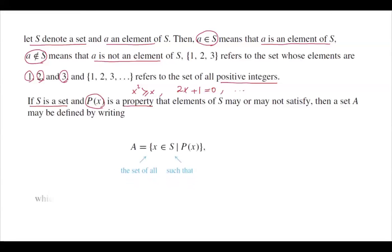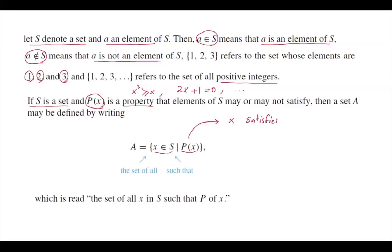Set A can be written as the set of all x values in S such that P(x) holds, meaning x in S satisfies property P. For example, A equals the set of all x values in the natural numbers such that x squared is greater than or equal to x. We can define sets in different ways, but this set-builder notation is a very prevalent and common way to represent a set, other than the roster form.